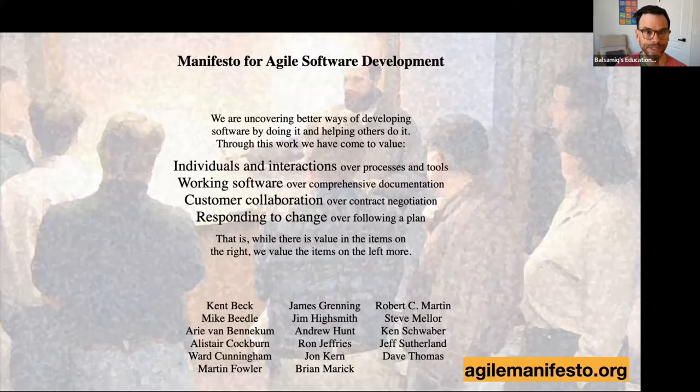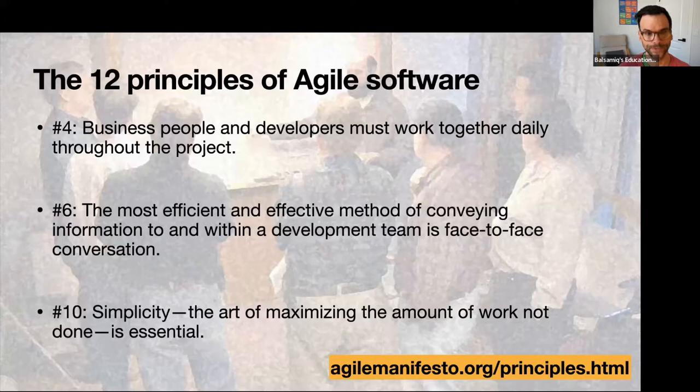It's useful to understand where they're coming from and really what the philosophy is behind it. There's one main page, and then there's another page called the 12 Principles of Agile Software, which is linked from that first page, also very short and easy to read. Here are three of them that I picked out, which are some of my favorites.